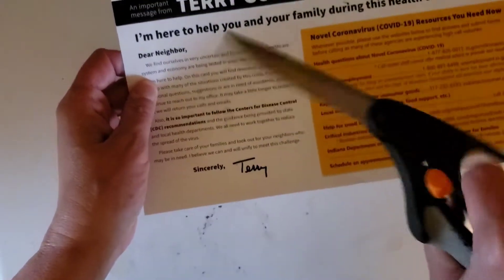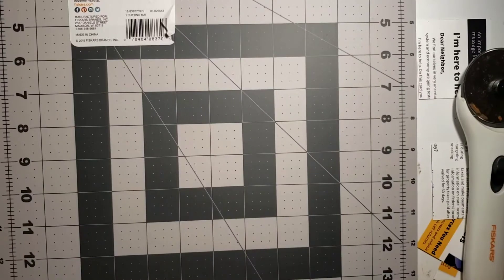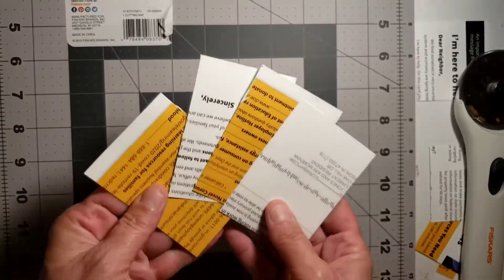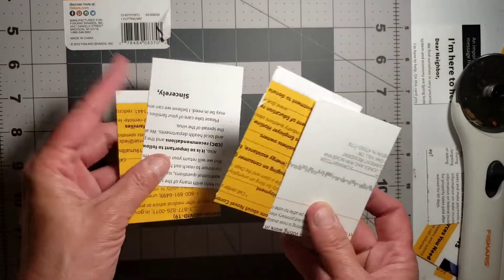I'm taking my junk mail and I'm going to cut it into two and a half by three and a half inch pieces. This is the exact size of a credit card or driver's license.